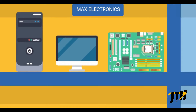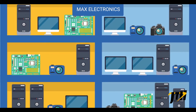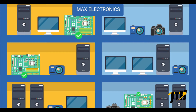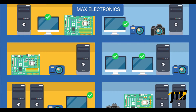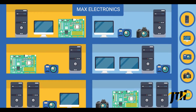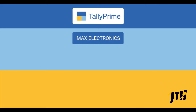Max Electronics is a trading business majorly selling computer parts. They also sell different types of digital cameras. Many times they want to know how many total computer parts are in stock and how many total digital cameras are in stock. They may also want to know within computer parts how many monitors are available, how many processors are available, etc.